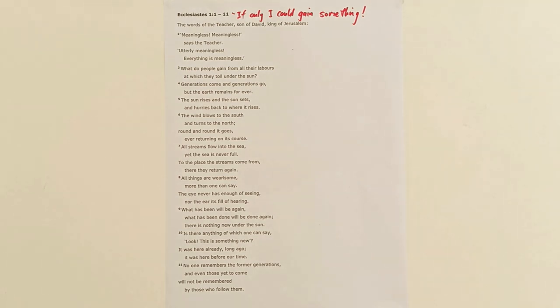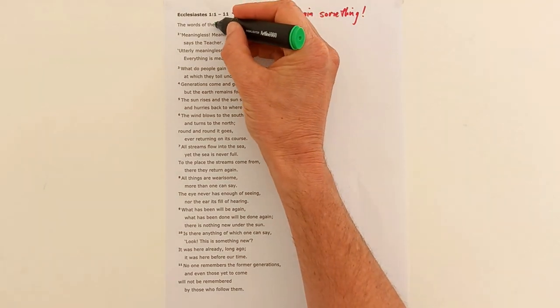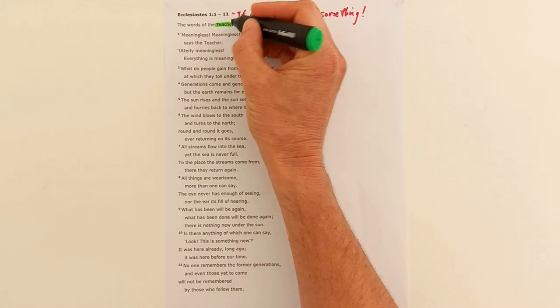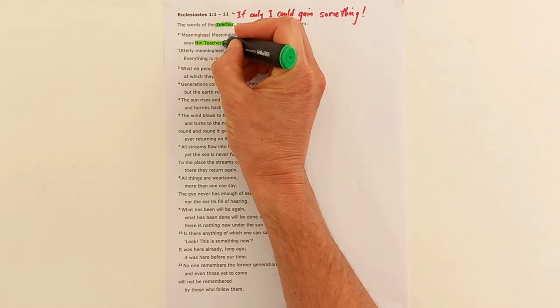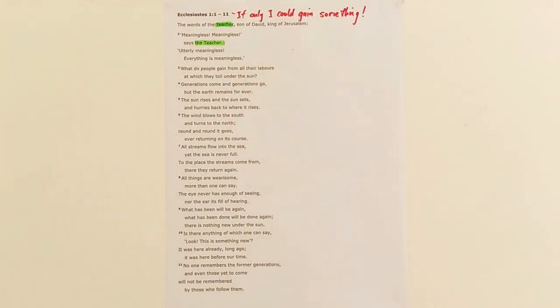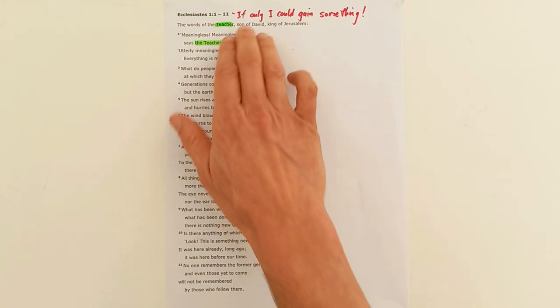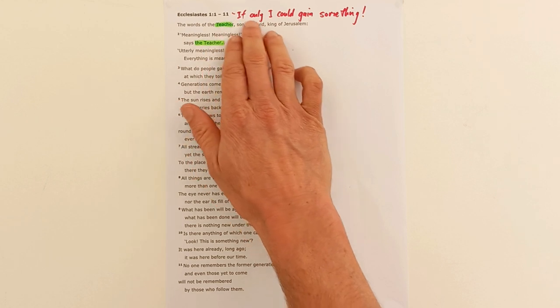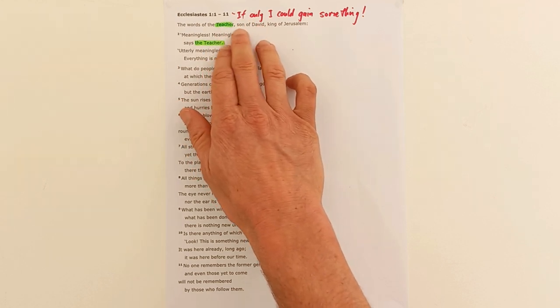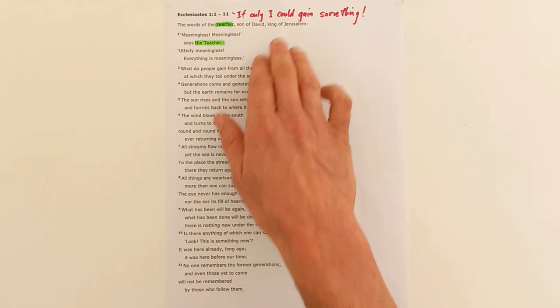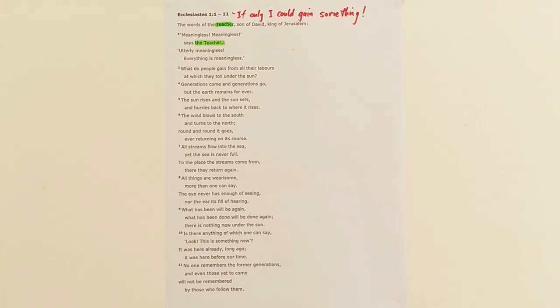We start here with the words of the teacher. A lot of ink has been spilt over trying to work out exactly who this teacher is. The words of the teacher, son of David, that has made many say they're sure that it's Solomon, king of Jerusalem. Many biblical scholars, many Christians over the years have gone with Solomon as the author to this text, but there is debate around that.